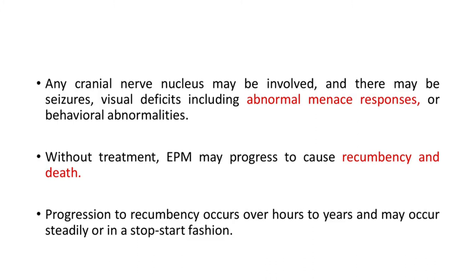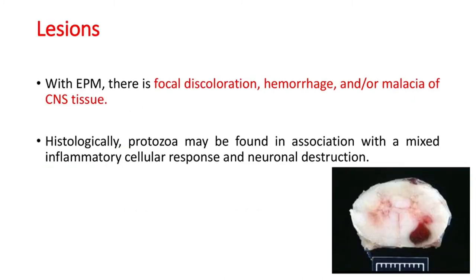Any cranial nerve nucleus may be involved, and there may be seizures, visual deficits including abnormal menace responses, or behavioral abnormalities. Without treatment, EPM may progress to cause recumbency and death; progression to recumbency occurs over hours to years, or may occur steadily or in a stop-start fashion. With EPM, there is focal discoloration, hemorrhage, and/or malacia of CNS tissue — you can see focal discoloration of hemorrhage of a spinal cord specimen here.